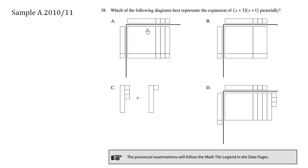So x plus 3 could be this one here, where x is a long stick — positive x — and positive 3: these are units, these are individual positive 1, positive 1, positive 1.